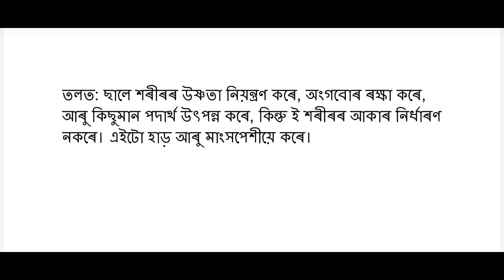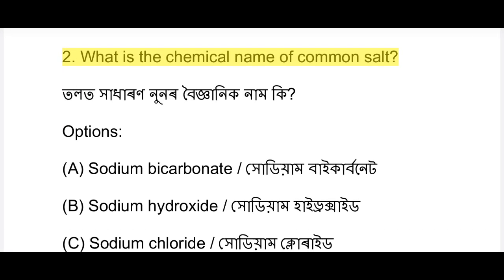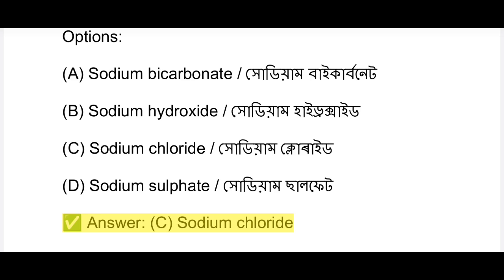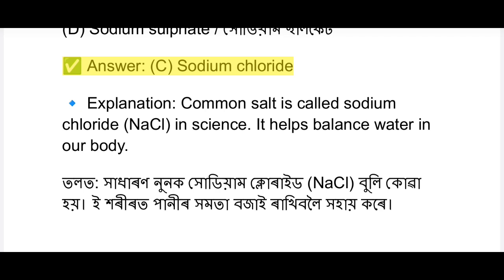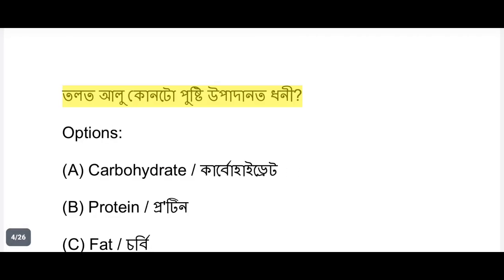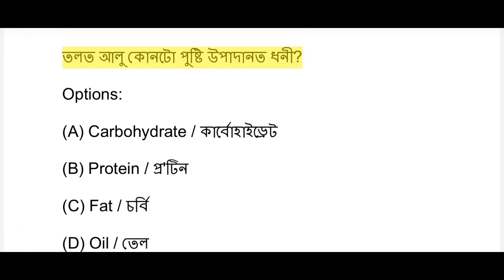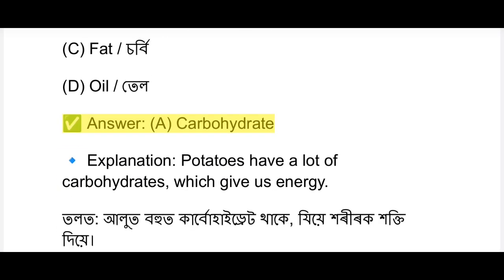Next question: what is the chemical name of common salt? Options are sodium bicarbonate, sodium hydroxide, sodium chloride, sodium sulfate. The chemical name of common salt is sodium chloride, symbol NaCl. This is how it helps balance water in our body.